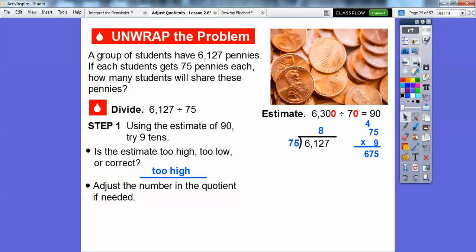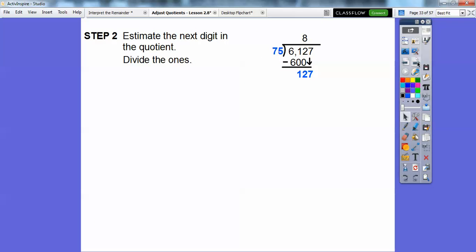Adjust the number in the quotient if needed. I brought it down to 8. 75 times 8 is 600. We can subtract those. We get 12 and slide that 7 down. Now estimate the next digit in the quotient. We're going to divide the ones here.